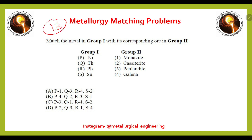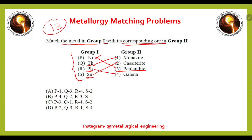This is the 13th matching problem — match the metals in group one with their corresponding ores. Nickel matches with pentlandite (P3), thorium with monazite (Q1), lead with galena (R4), and tin with cassiterite (S2). Cassiterite was also covered in the first video. The right answer is option C: P3, Q1, R4, S2.